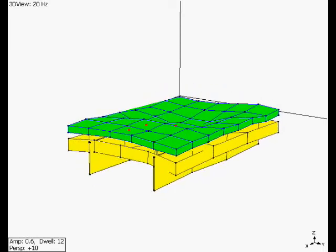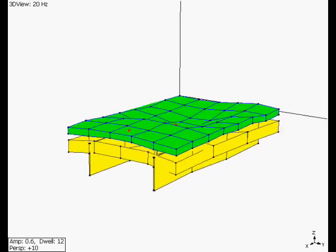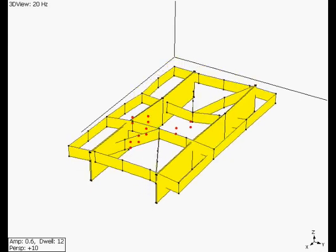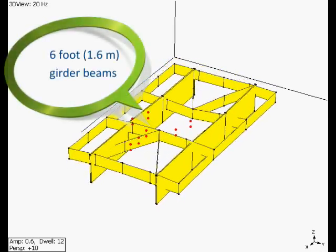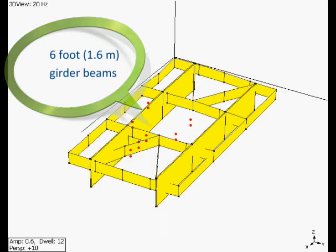Note the six-foot girder beam here in the animation. The question is, how could the small compressor cause the mass of girders to vibrate excessively?